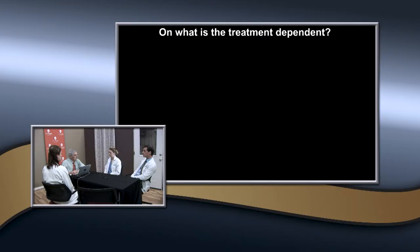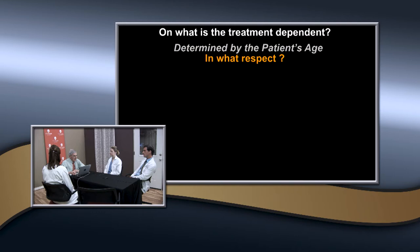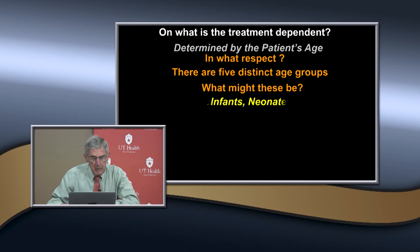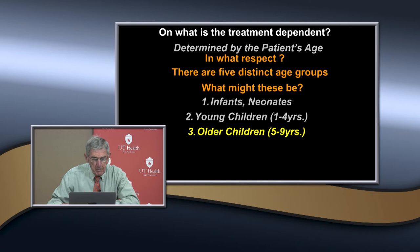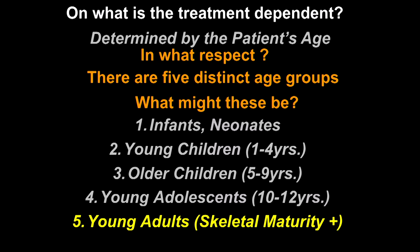Treatment is determined by the patient's age. There are five distinct age groups: infants and neonates up until they're really walking; young children; older children; young adolescents; and young adults at skeletal maturity, who we treat just like adults based on basic principles. We determine what treatment to use based on the patient's age and displacement.